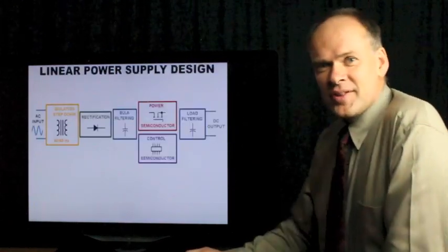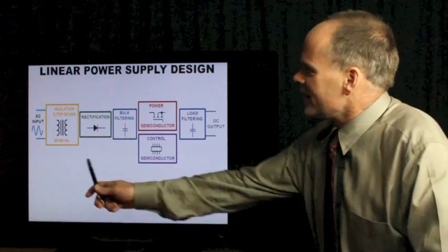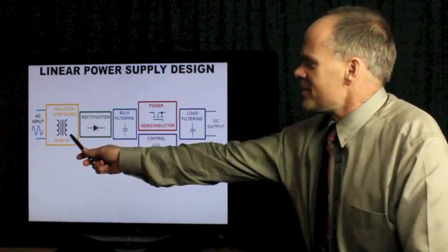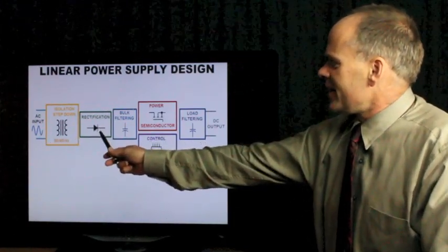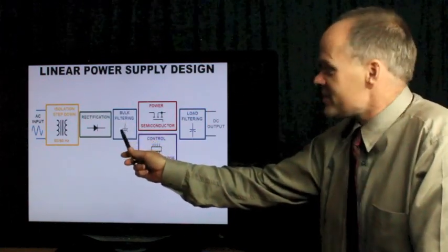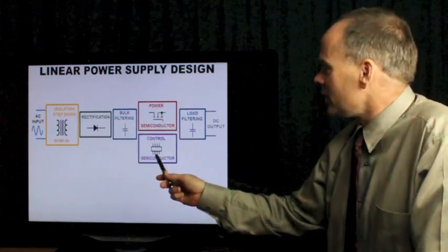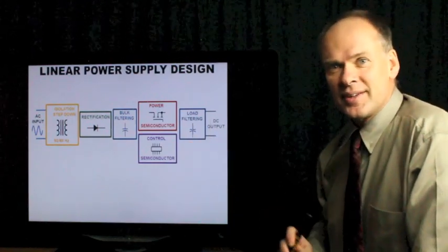If you remember in part one of the series, we first looked at the linear power supply, took the AC input, an isolation step-down transformer, rectifier diodes, bulk filtering capacitors, then your semiconductors, power and control, load filtering to your DC output.